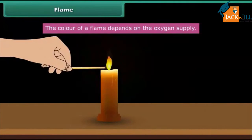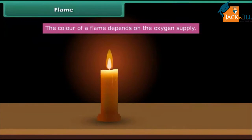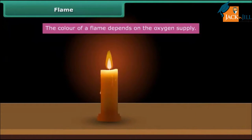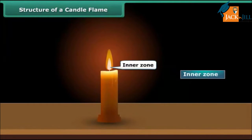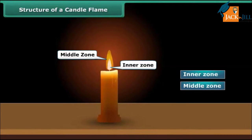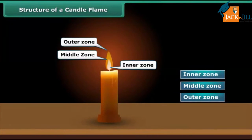When we burn a candle with a matchstick, the heat of the matchstick melts and vaporizes wax, which rises through the wick and forms a flame. A candle flame can be divided into three regions: inner zone, middle zone, and outer zone.